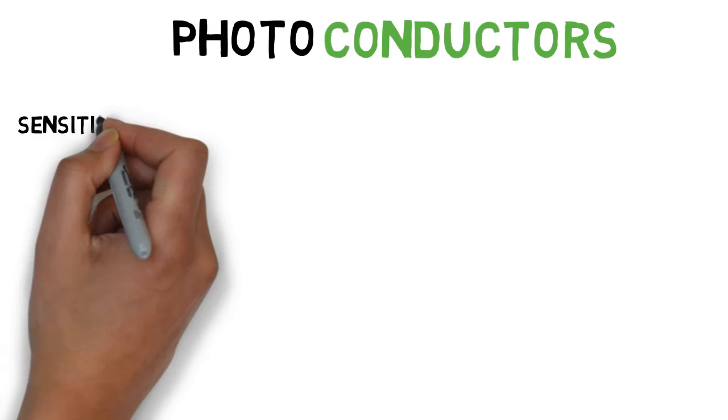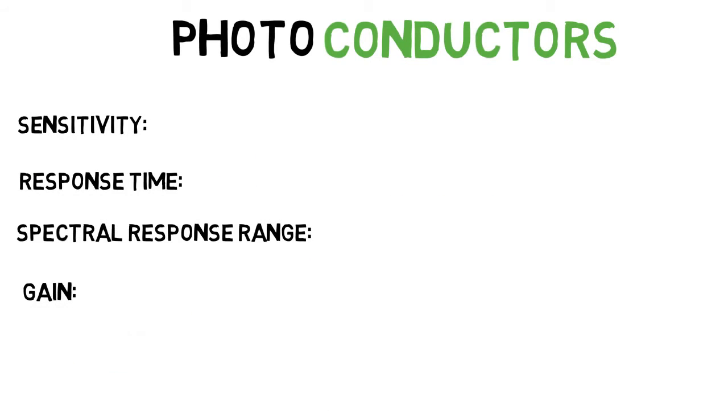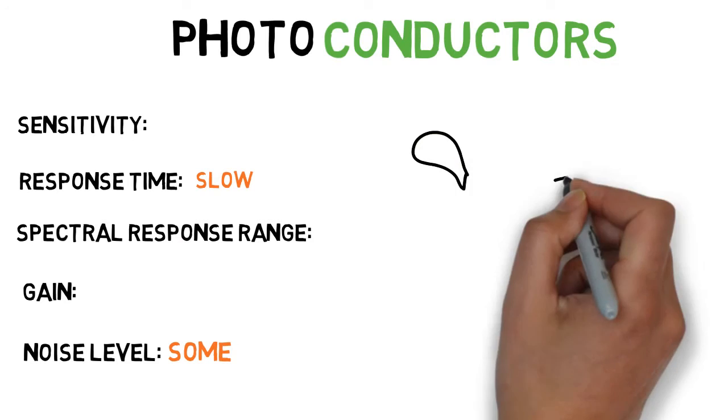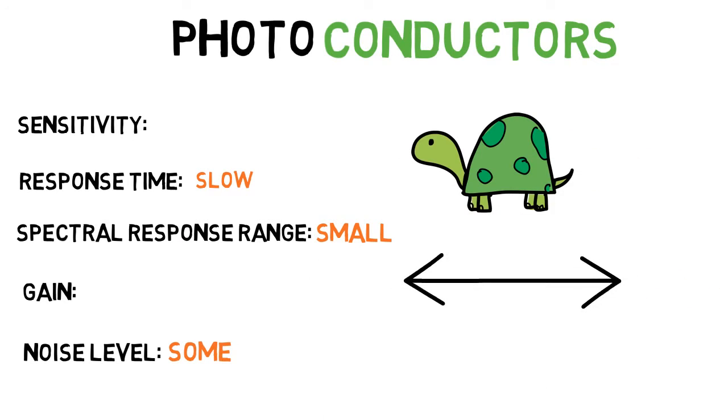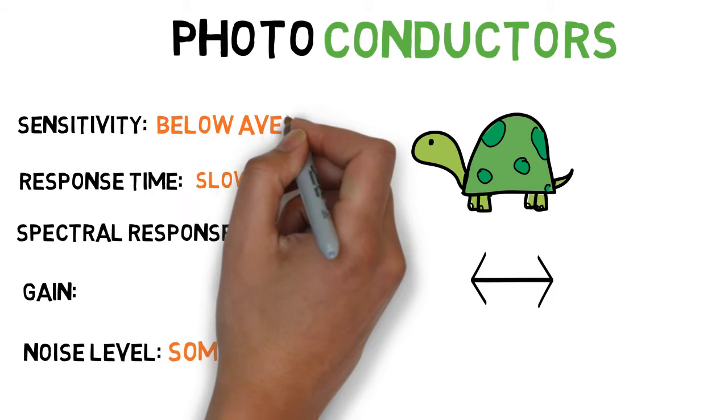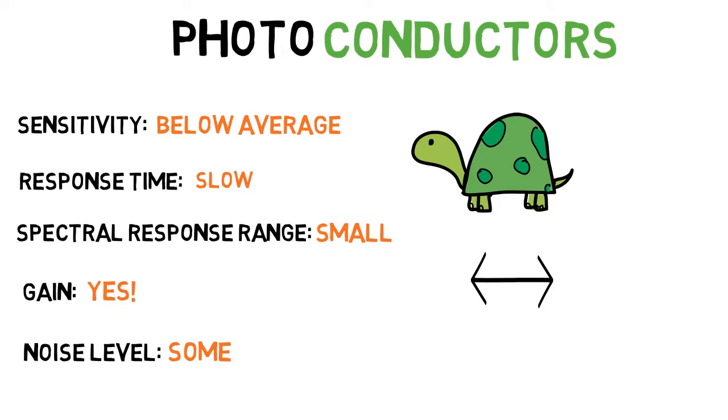Next, there are photoconductors. These are the simplest conceivable optical detectors, and are also considered the slowest. The spectral response range is rather small, and these devices are usually used for long wavelengths. They exhibit below average sensitivity, but produce internal gain.